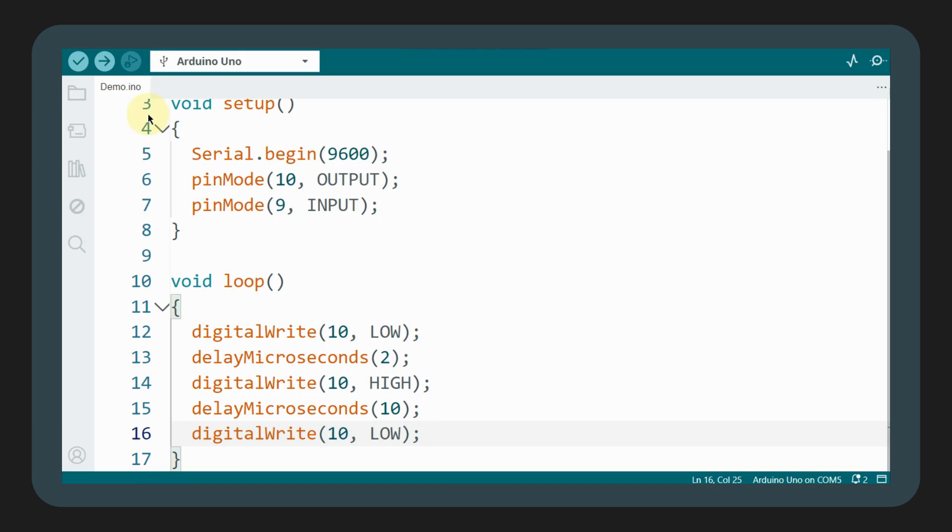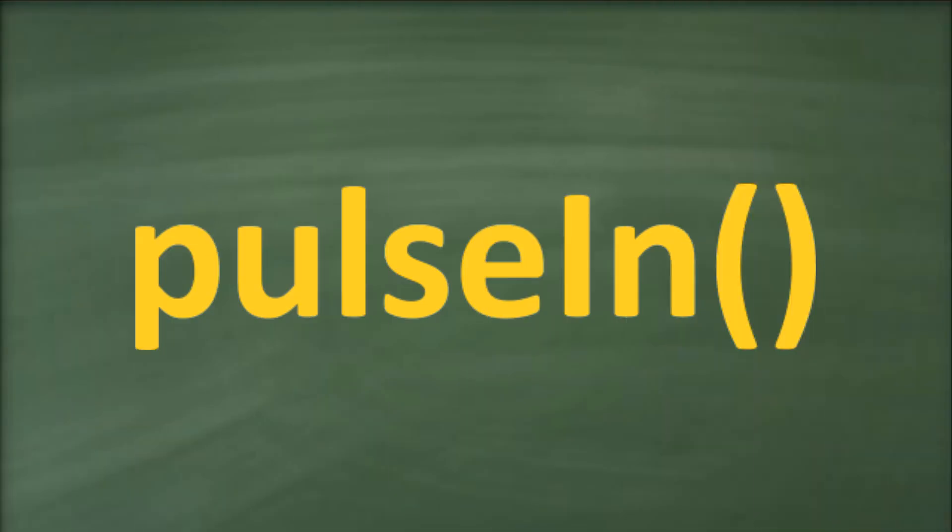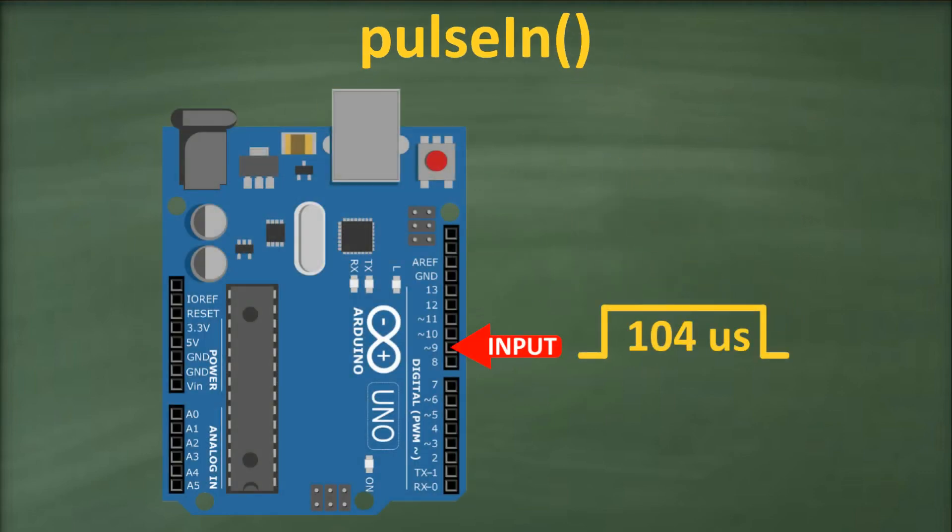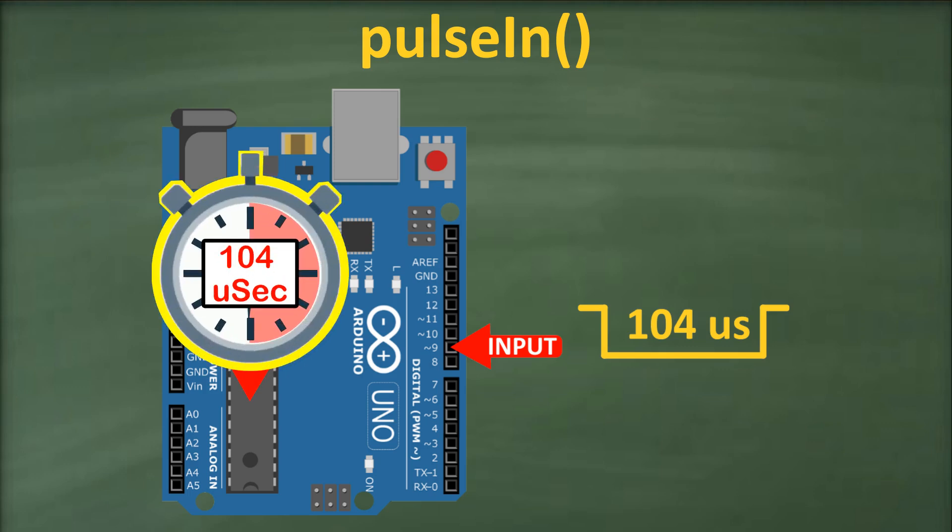Now, we need to calculate the duration of the pulse on the echo pin. For this, we use the pulseIn function. This function reads a pulse, either high or low, on a specified pin and returns the length of the pulse in microseconds. It takes two parameters: the pin number and the type of pulse, high or low.